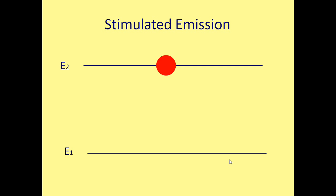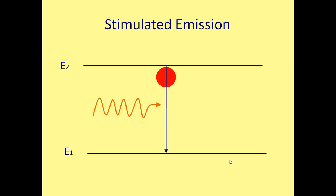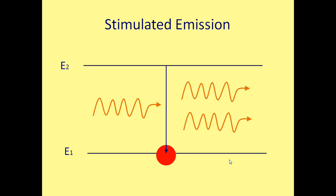Lasers take advantage of a process called stimulated emission. Unlike spontaneous emission, which occurs without a trigger, this occurs when an atom in a higher energy level is stimulated by an incident photon with energy equal to the difference between the two energy levels. This atom drops down to the lower energy level, E1. In doing so, the energy from the incident photon and the energy difference between the two energy levels are released in the form of two identical photons.